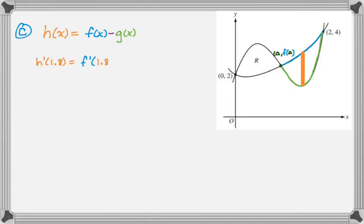h prime of 1.8 is going to be f prime of 1.8 minus g prime of 1.8, and my calculator told me that was negative 3.812, and that's the whole problem. So I hope you found this helpful, and good luck!